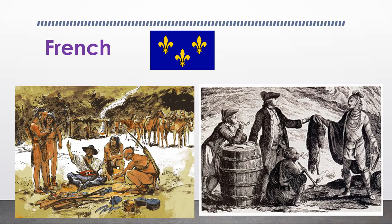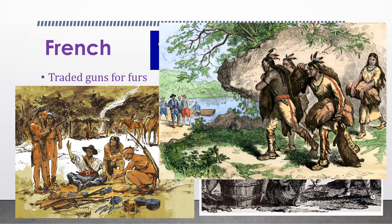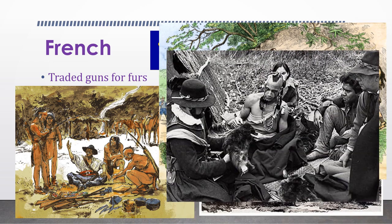The French had a different approach when they began interacting with the Native Americans in the New World. Instead of conquering and enslaving the Native peoples like the Spanish were doing, they viewed the Native Americans as a resource that could vitally help them increase their success in settlement. Many of the French explorers saw their exploration missions as opportunities to make connections with the Native Americans so that they could conduct business with them. The French were big on fur trading, and this provided them with a lot of money.